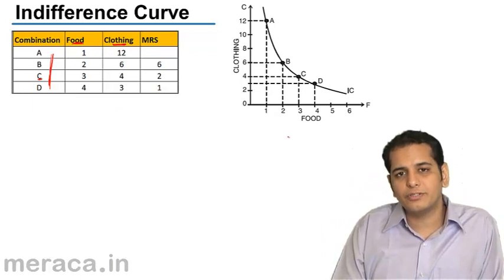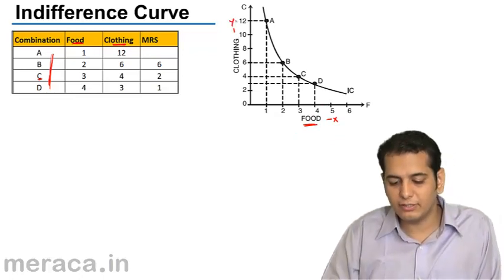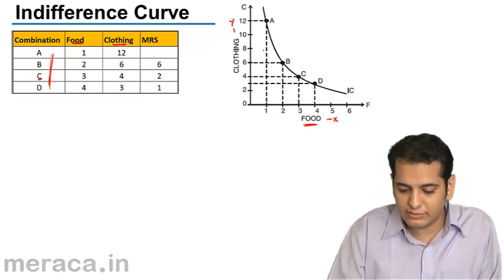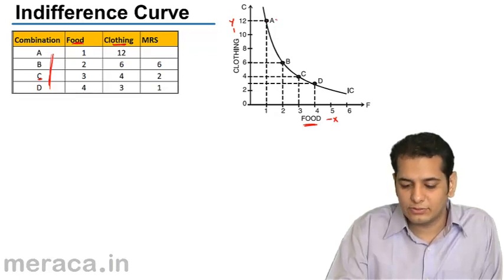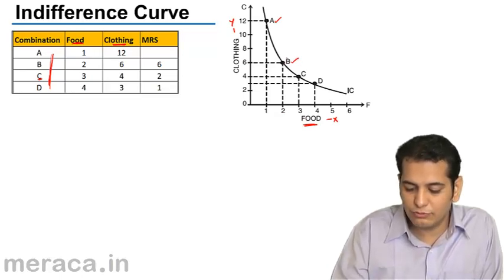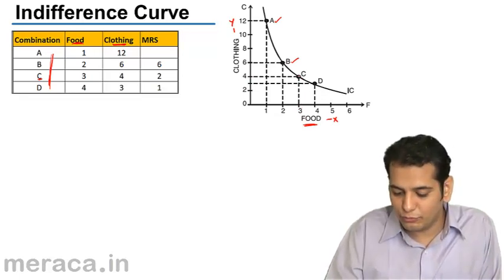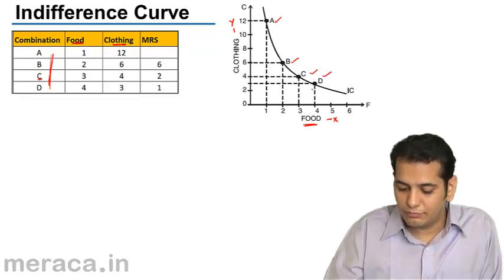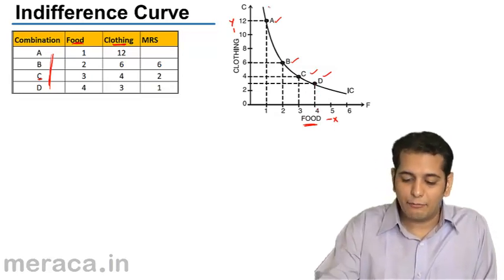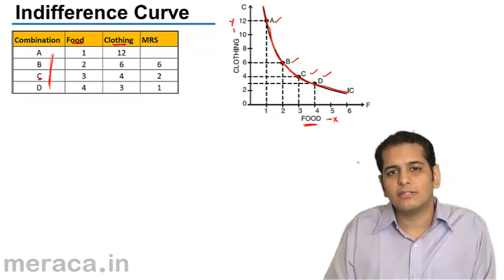We plot these points on a graph. On the x-axis we have food, and on the y-axis we have clothing. The first coordinate is 1 and 12 — one on the x-axis and 12 on the y-axis — giving us point A. Similarly, we plot point B at two units of food and six units of clothing. Likewise, point C at three units of food and four units of clothing. Finally, we plot point D at four units of food and three units of clothing. When we join all these points, the curve we get is called the indifference curve.